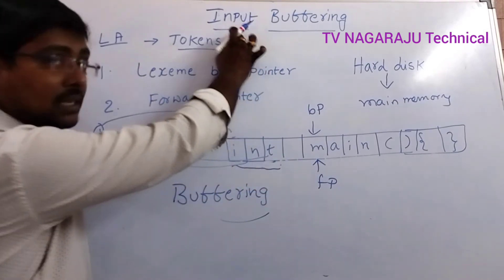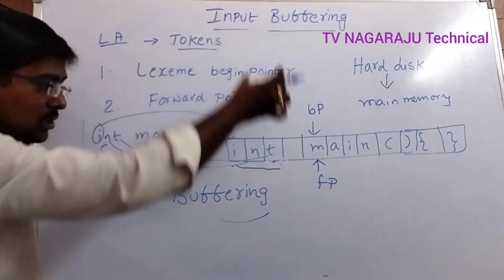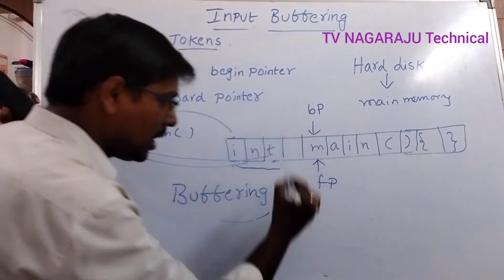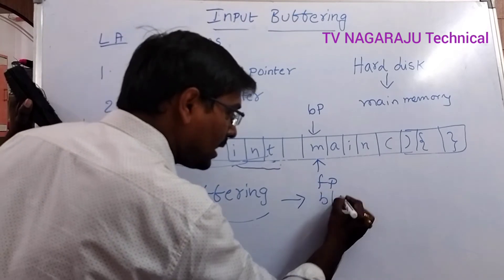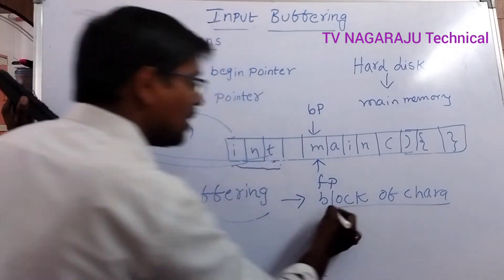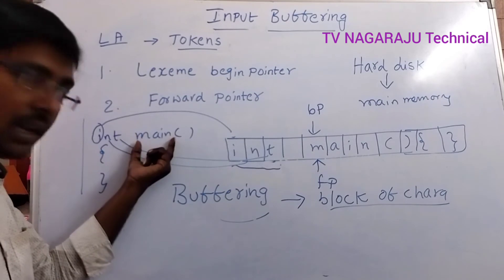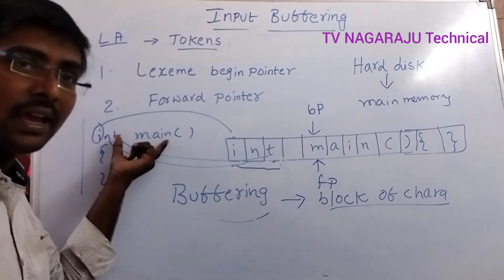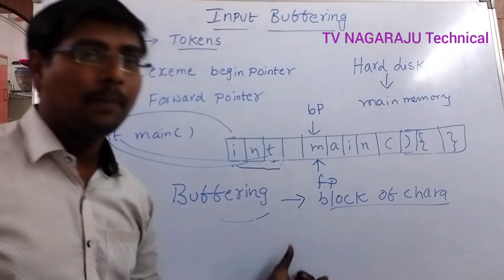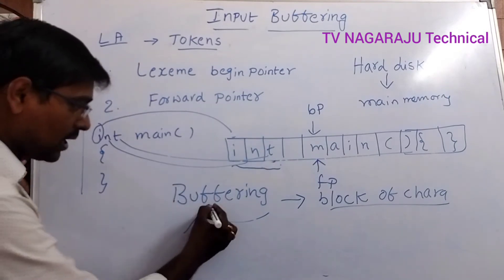In input buffering, the source program input is loaded into a buffer. Instead of reading character by character, at a time we read a block of characters using a single system call. For example, instead of 10 system calls for 10 characters, by using only one system call we read the complete block of characters. Buffering is of two types: one-buffer scheme and two-buffer scheme.